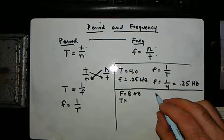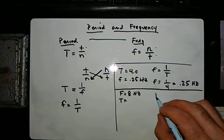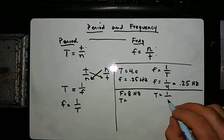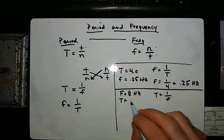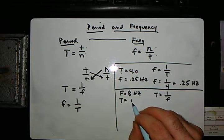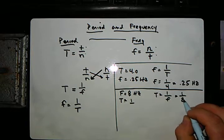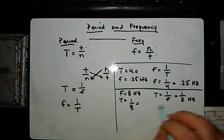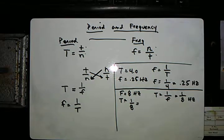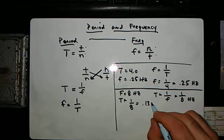So again, we've got a formula that says the period is 1 over the frequency. So the period here is going to be 1 over 8, or you can call it 1 eighth, or you could call it 0.13 seconds.